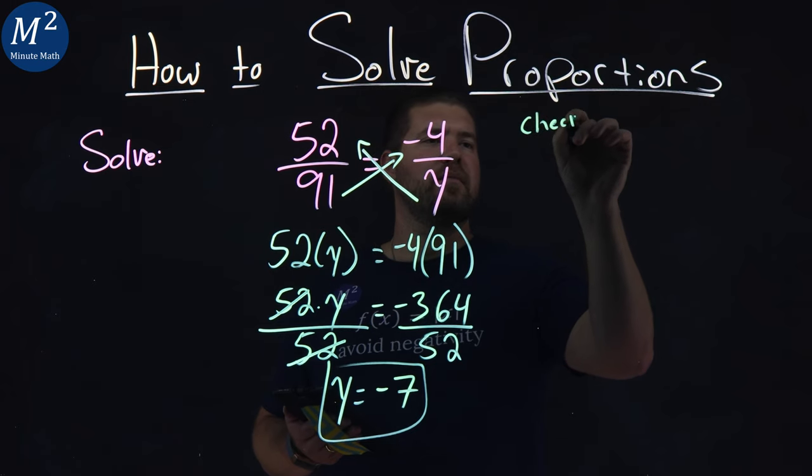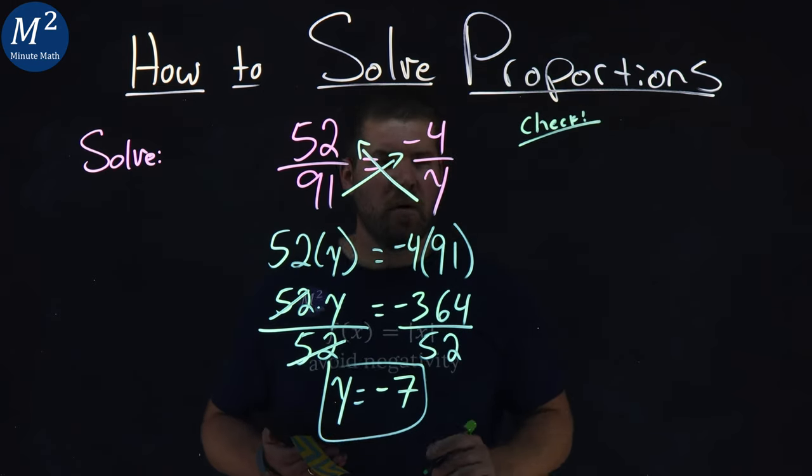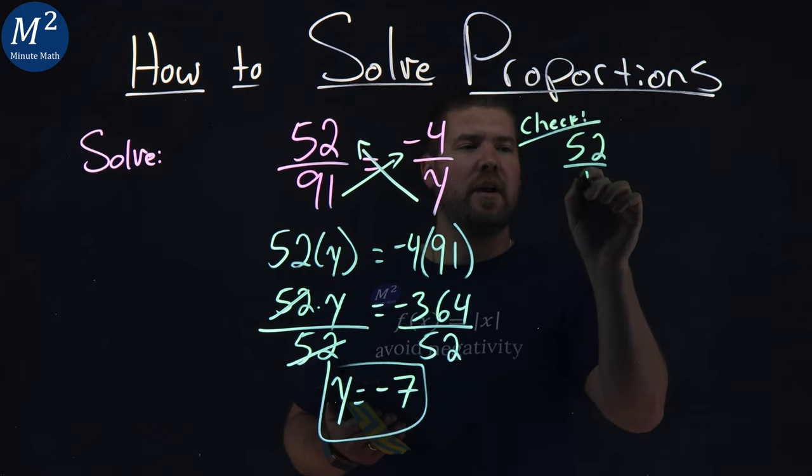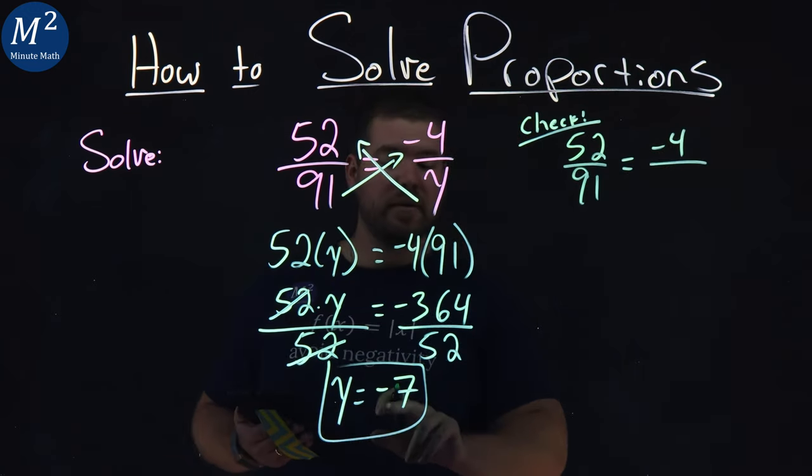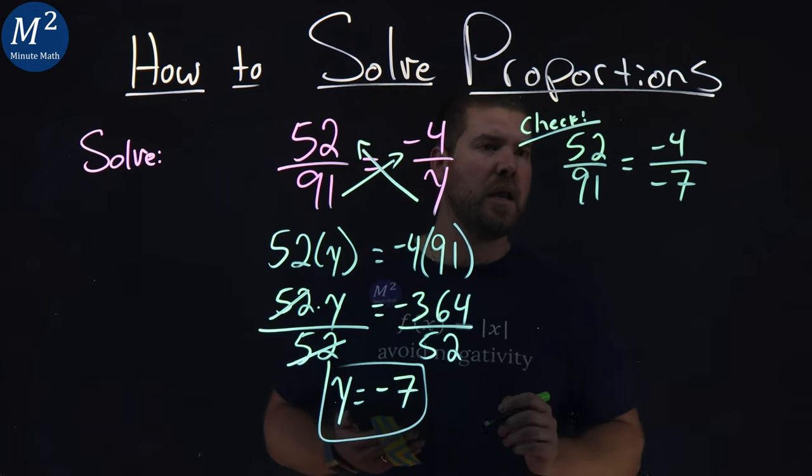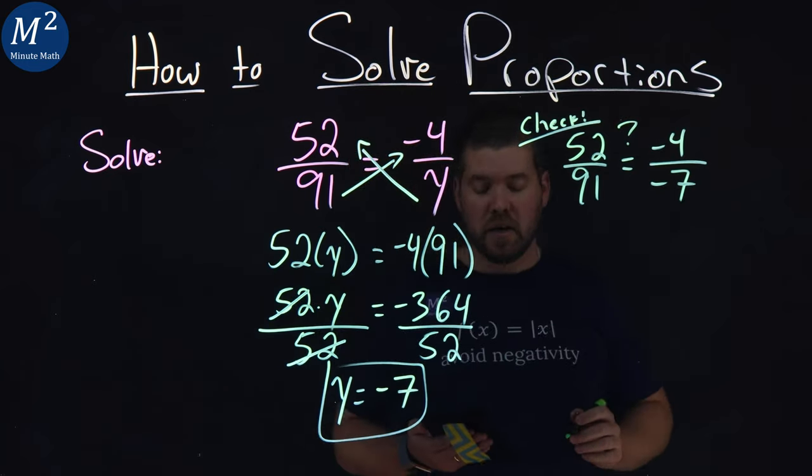Let's check this to make sure it's right. We rewrite our proportion, 52 over 91, is equal to negative 4 over our y value, negative 7. And we want to see if the left-hand and right-hand side are equal.